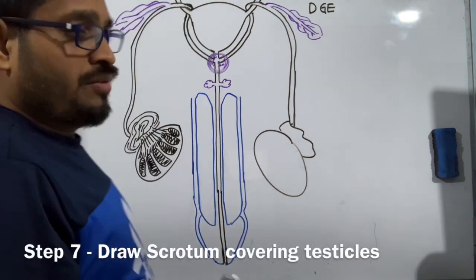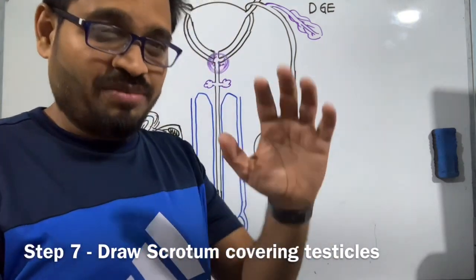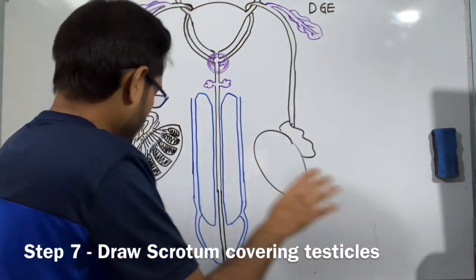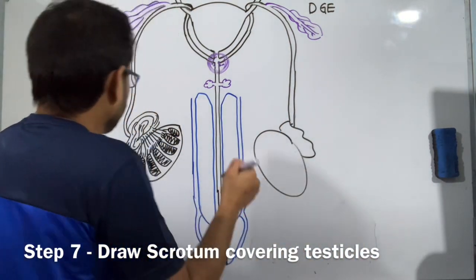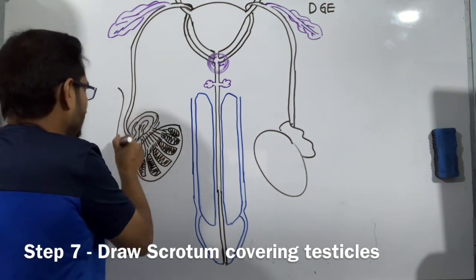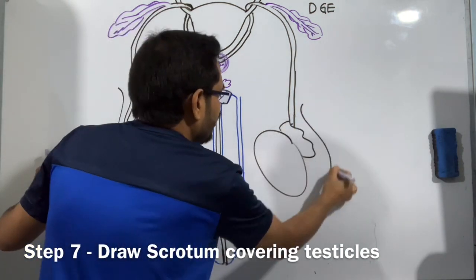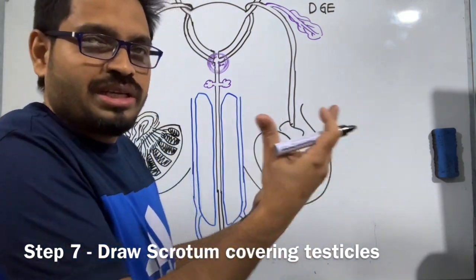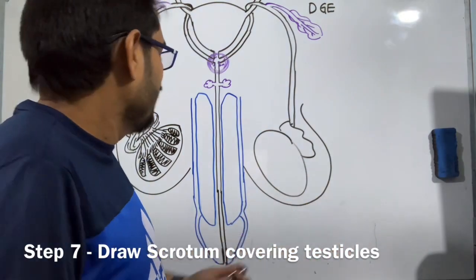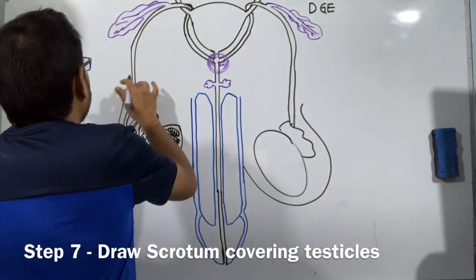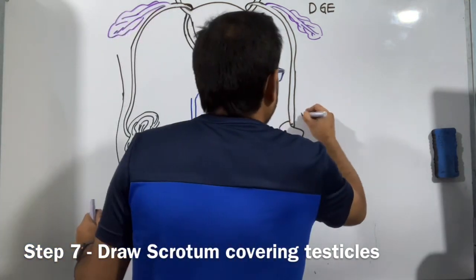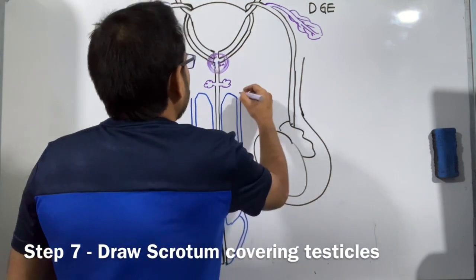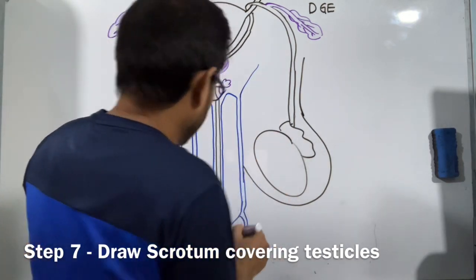We are not done — a very important thing is missing. This scrotum should cover the testicles. If this covering line is not drawn, how can the testicles stay there in the air? It's impossible. Don't forget that. And this scrotum can just go a little more up — it hangs from the abdomen. Just to show that, this can extend a little like this.